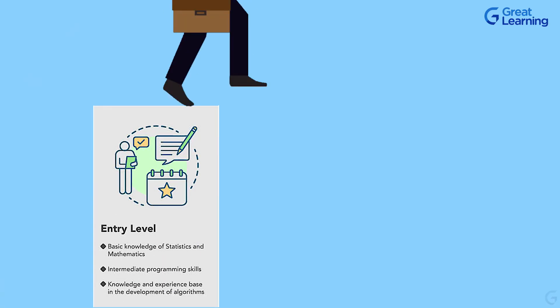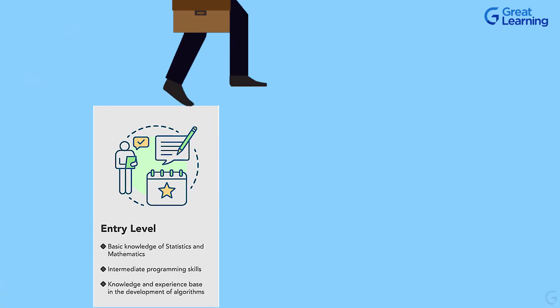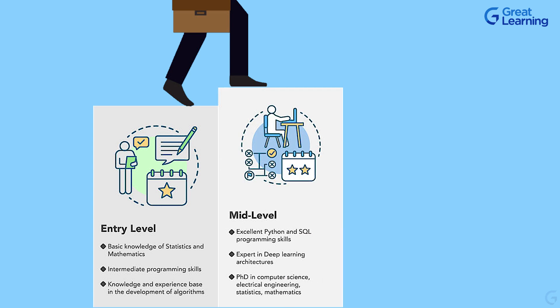In the career path of machine learning, you can start off as an entry-level machine learning engineer, possessing basic knowledge of statistics, mathematics, and development of algorithms coupled with intermediate programming skills. Then you can advance to a mid-level machine learning engineer, acquiring a PhD in computer science, electrical engineering, statistics, or mathematics, and gaining expertise in deep learning architectures, Python, and SQL programming skills.